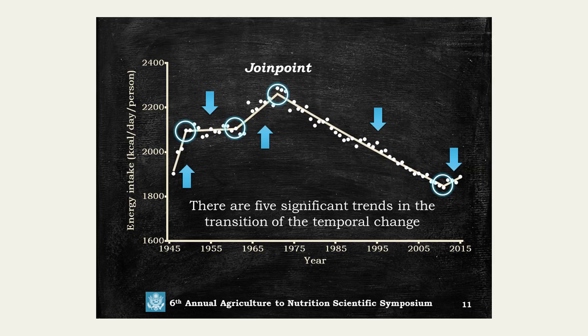To illustrate, here is a 73-year dietary intake dataset from Japan, showing how the diet changed from just after World War II to 2015. In this dataset, there are five significant trends that changed over the period in the Japanese diet: an upward change, then a stagnant phase, then a change, and then a slope downward. These are the five significant trends in the temporal transition of dietary intake in Japan, and these are the points where the segmented regression lines are joined together — called joint points.